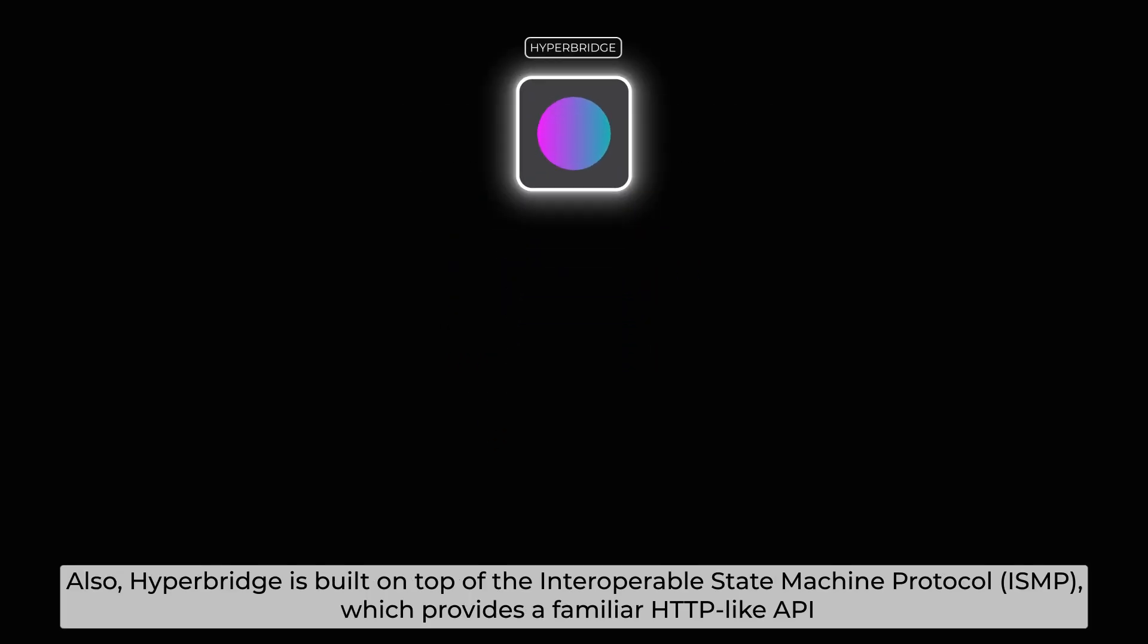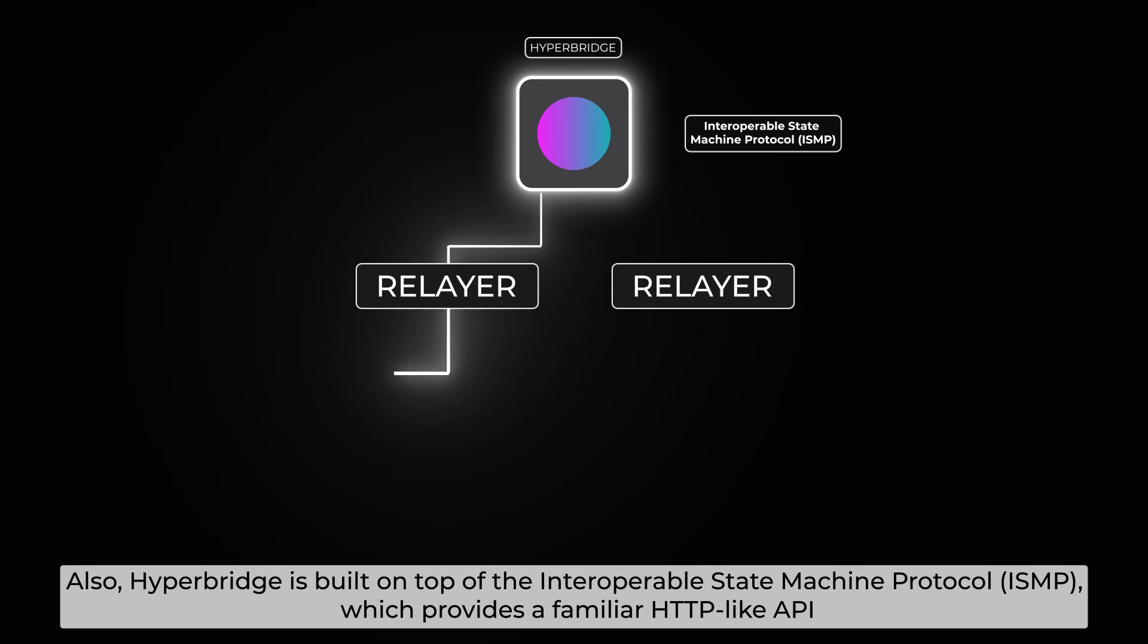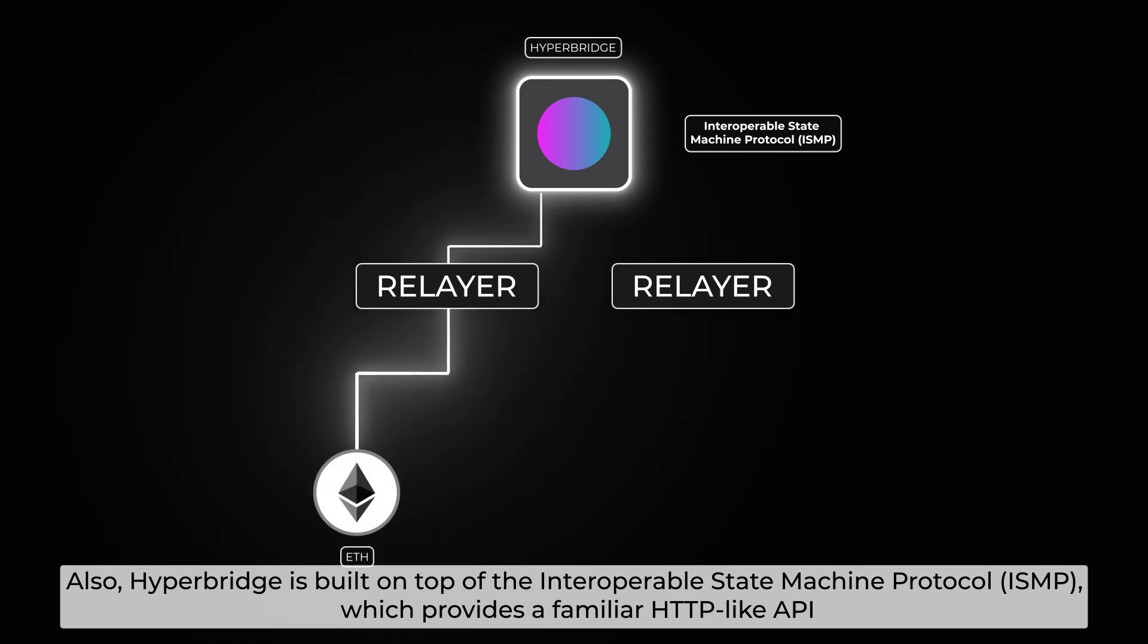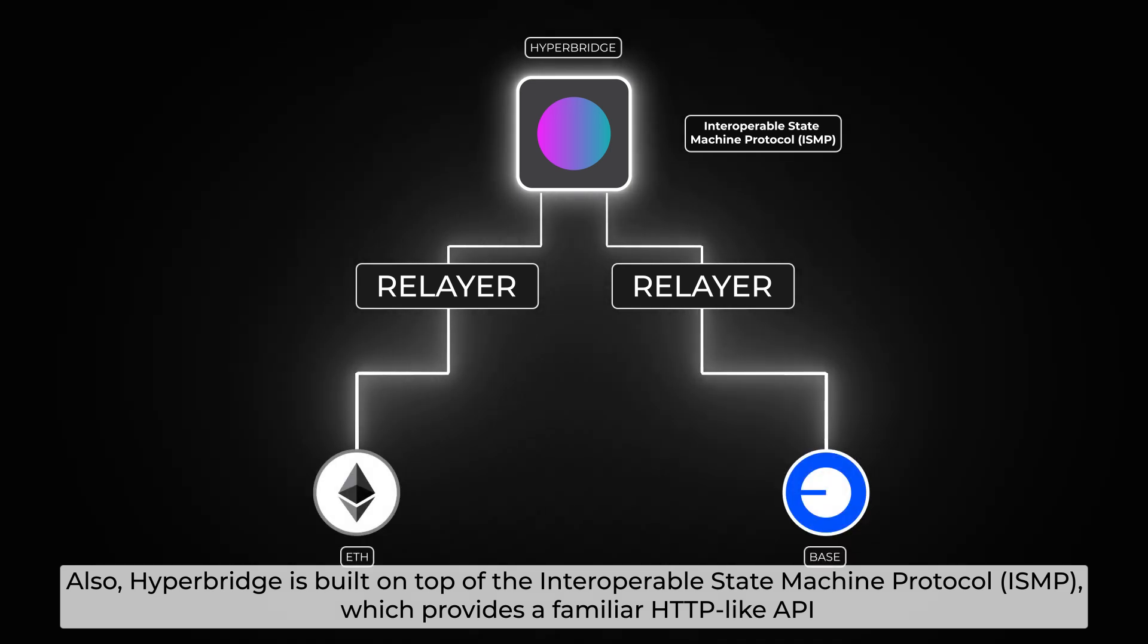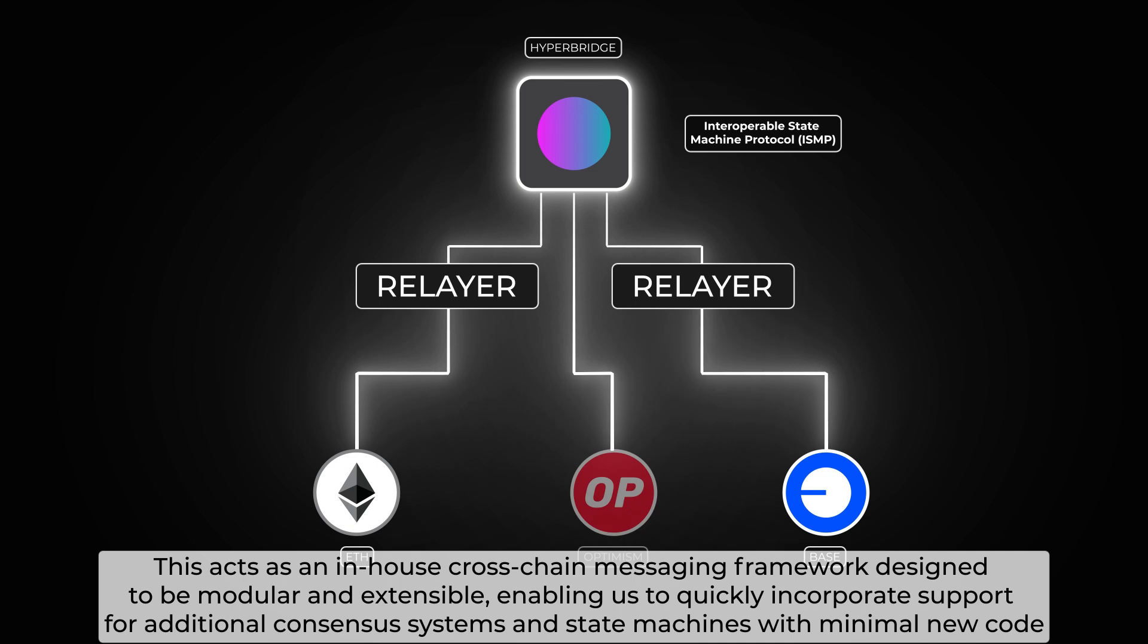Also, Hyperbridge is built on top of the interoperable state machine protocol, which provides a familiar HTTP-like API. This acts as an in-house cross-chain messaging framework designed to be modular and extensible, enabling us to quickly incorporate support for additional consensus systems and state machines with minimal new code.